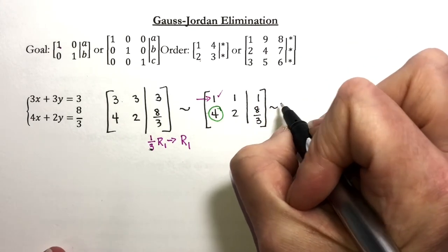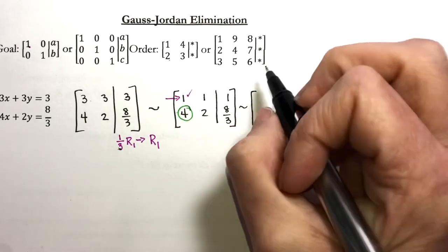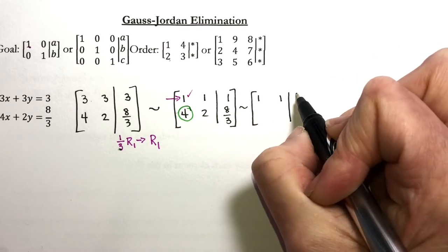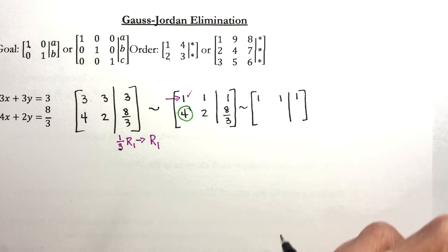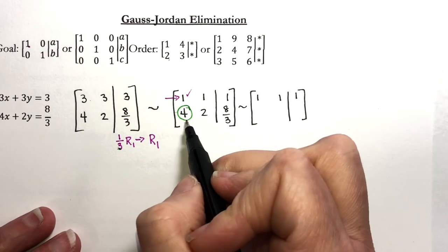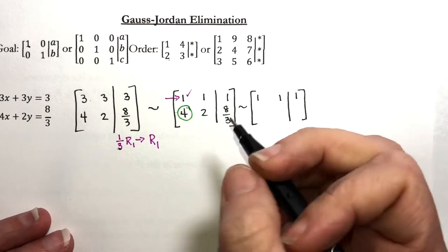So what am I going to do? I don't need to change row one at all, so I'm just going to go ahead and rewrite it. It's a tool row. We pick it up, we use it, but we do not change it. Now I'm trying to get rid of a four. What can I multiply a one by to get rid of a negative four when I add them together? A negative four.